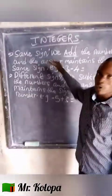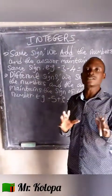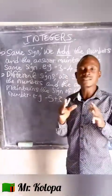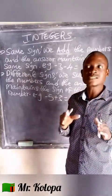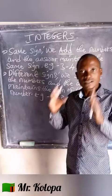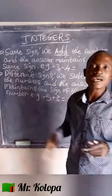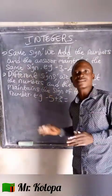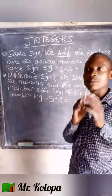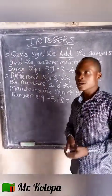The first point: same signs — you add the numbers, and the answer maintains the same sign. Different signs — you subtract the numbers, and the answer maintains the sign of the bigger number. Make sure that you master these two points.